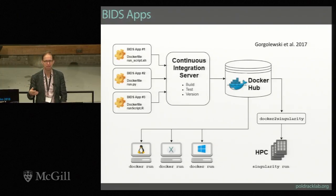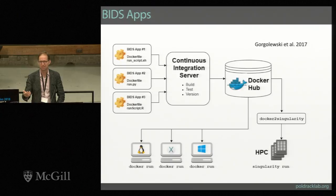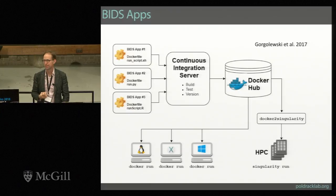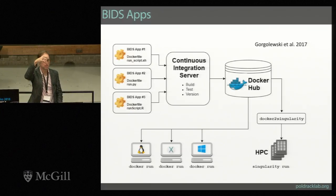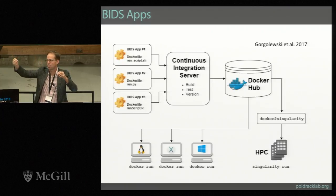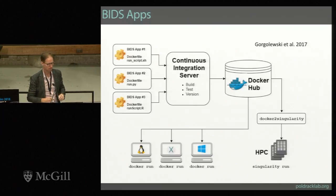What's a BIDS app? When thinking about how to incentivize usage of BIDS, we wanted to think about why somebody might use BIDS other than just liking standards. The idea was: if putting data into BIDS makes it easy to do other stuff, that's going to drive people to use BIDS. A BIDS app is basically a containerized piece of software that's aware of the BIDS standard, structured such that it knows what files are where. It's a wrapper that can take, for example, FreeSurfer and tell it where to look within a BIDS dataset to find the images it needs.